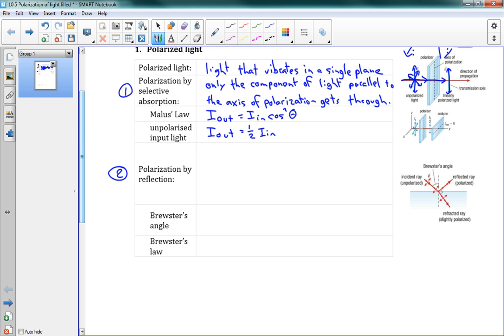Now the next one here, polarization by reflection. This happens any time light reflects off of a surface. Some of that reflected light is polarized. And it depends on the angle and the material how much of the light is polarized. And here's why.